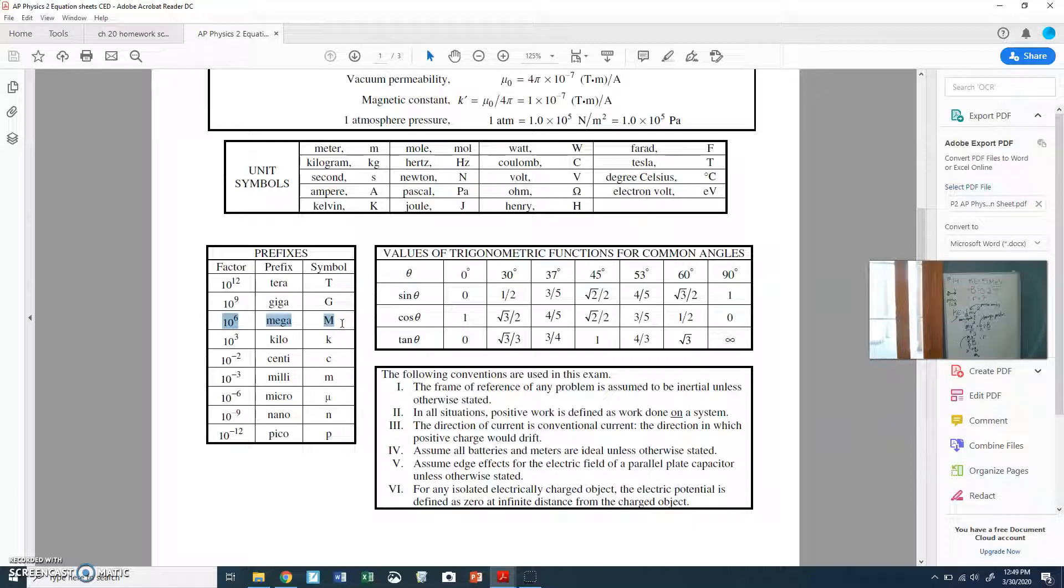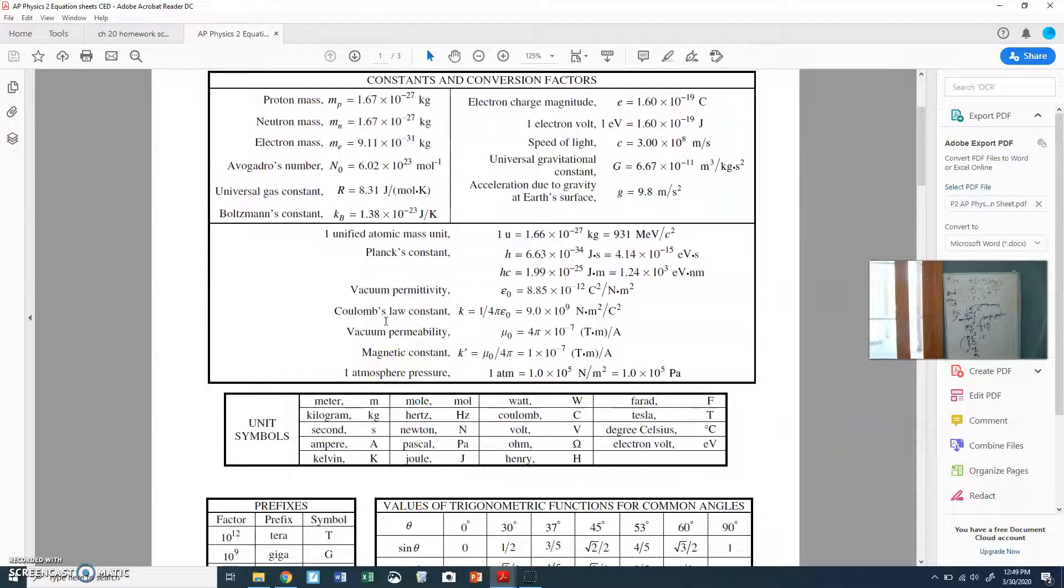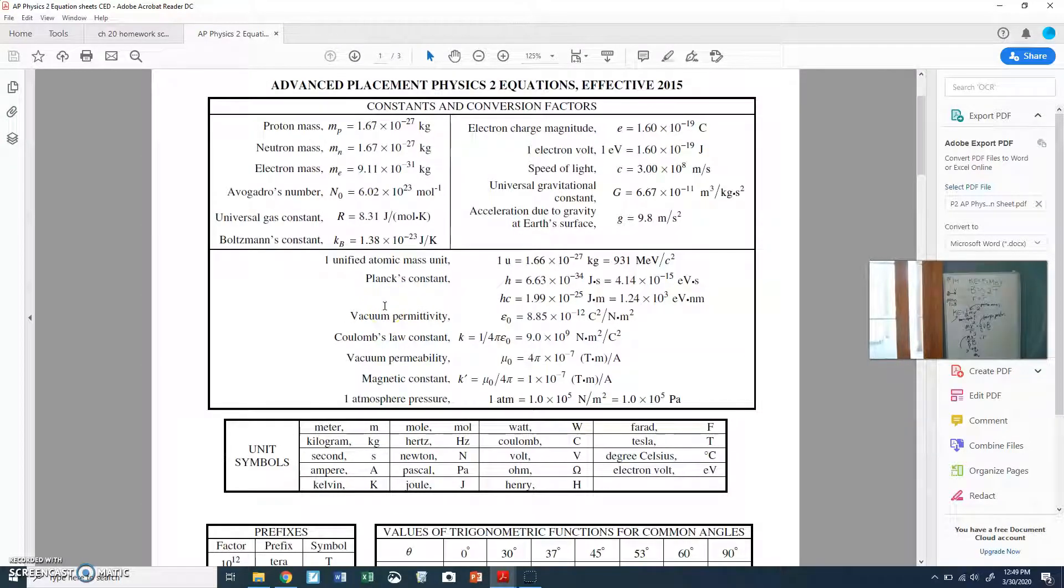So, first of all, let's get our charges. Proton mass, 1.67 times 10 to the negative 27 kilograms. And then, what was it? We want the charge, electron charge magnitude, but the charge magnitude is also for an electron. It's the same as a proton. So that's equal to 1.6 times 10 to the negative 19. And that's coulombs. Let's double check that. Yep. Got that. What else did we need? We've got B. We need V.